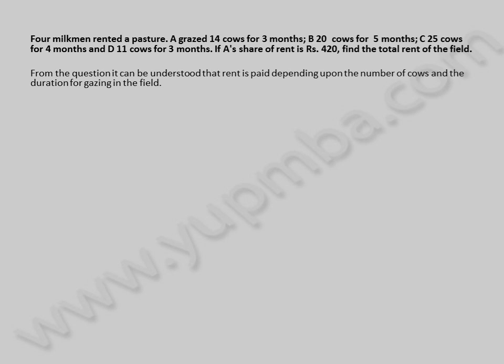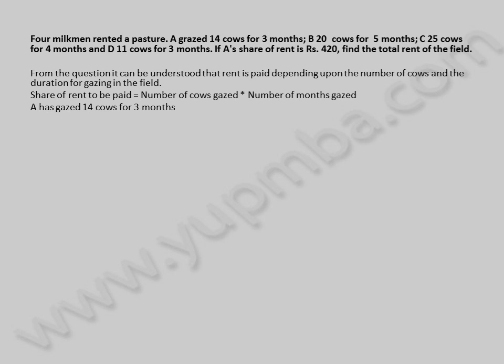Four milkmen rented a pasture. A grazed 14 cows for three months, B 20 cows for five months, C 25 cows for four months, and D 11 cows for three months. If A's share of rent is 420 rupees, find the total rent of the field. From the question, it can be understood that rent is paid depending upon the number of cows and the duration for grazing. Share of rent to be paid is equal to number of cows grazed multiplied by number of months grazed.